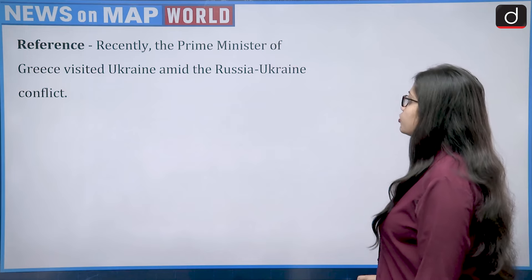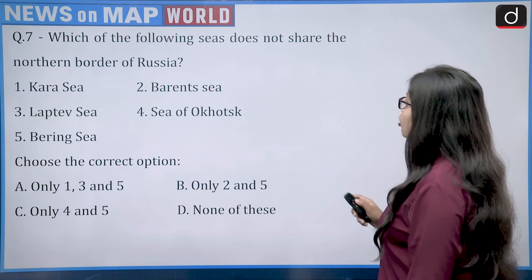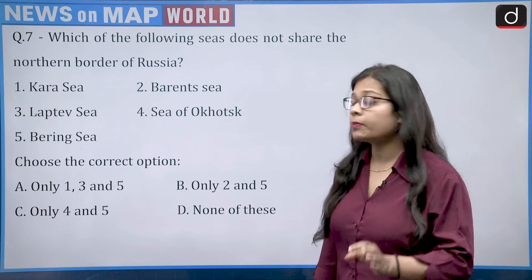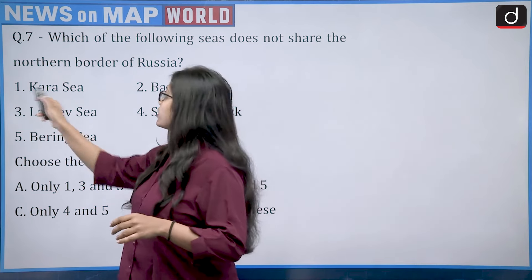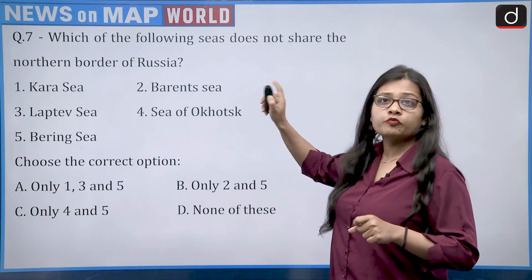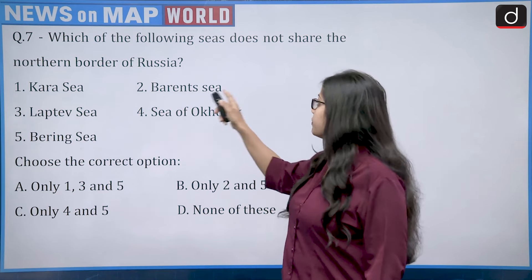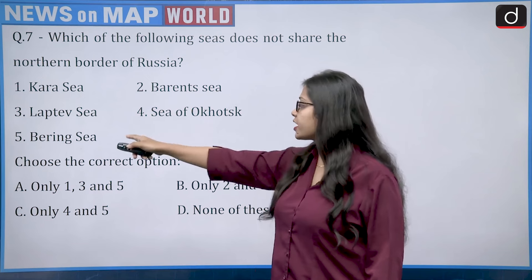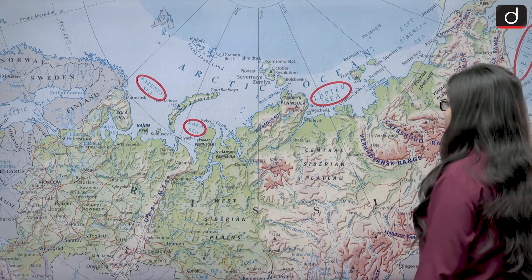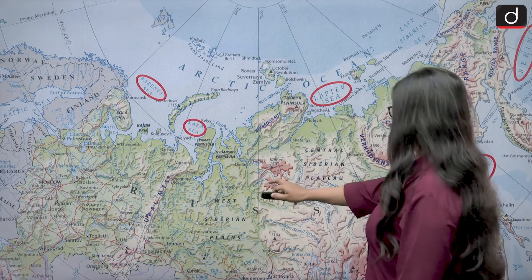The final question is referenced by the Greek Prime Minister visiting Ukraine amid the Russia-Ukraine conflict. It asks: which of the following seas does not share the northern border of Russia? The options are the Kara Sea, Barents Sea, Laptev Sea, Sea of Okhotsk, and Bering Sea.